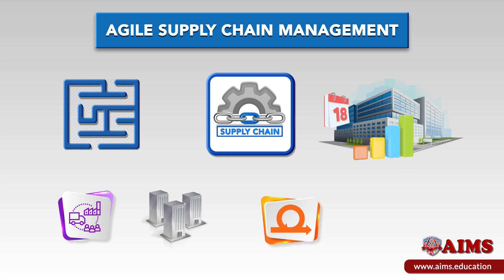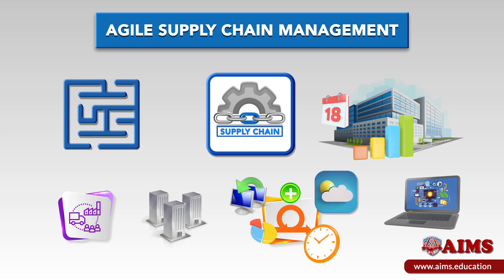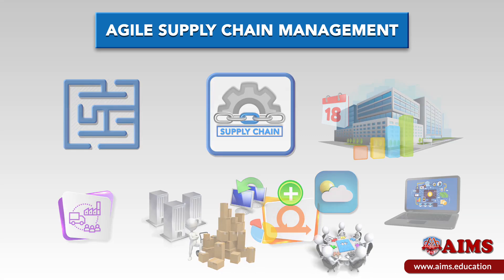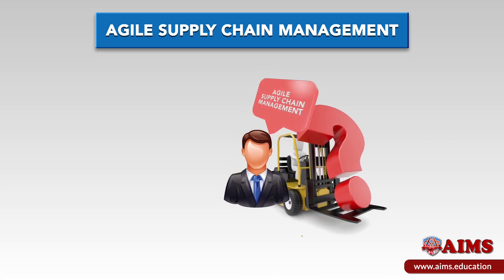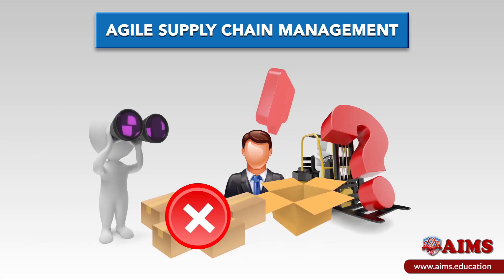The agile supply chain management relies on using real-time data to compare against forecasts of future demand. It adds the ability to leverage what you're currently doing to create greater productivity and efficiency in the future. You can think of agile supply chain management as an active system that anticipates future demand while keeping track of what you currently have in stock, helping you avoid potential shortages and overstocking your inventory.